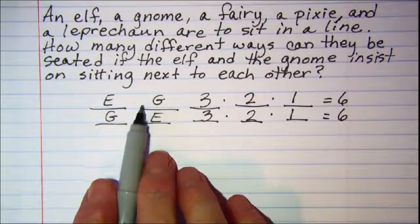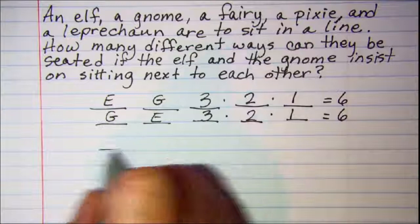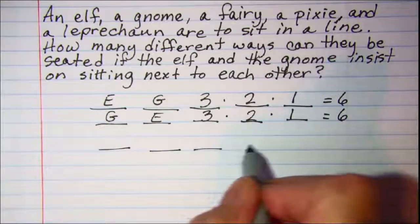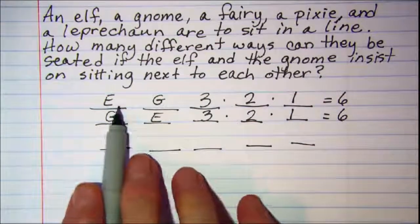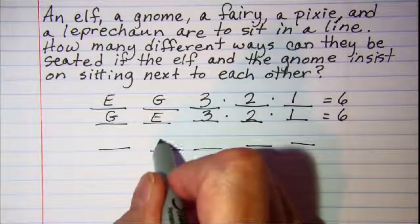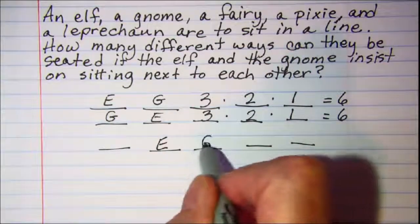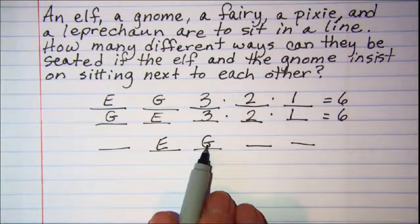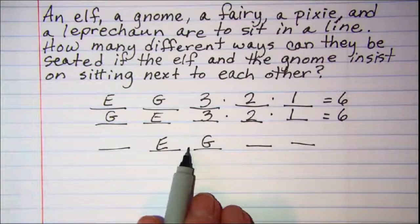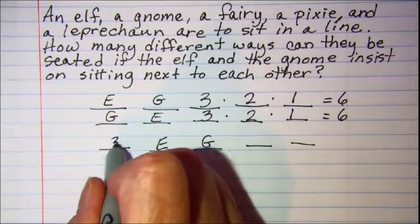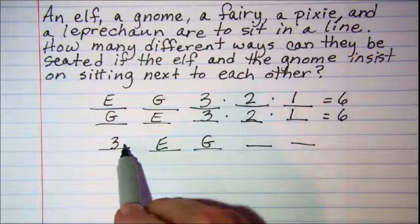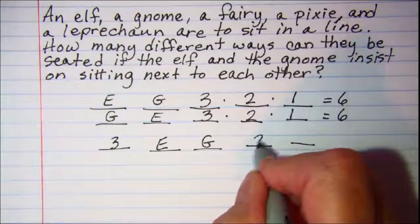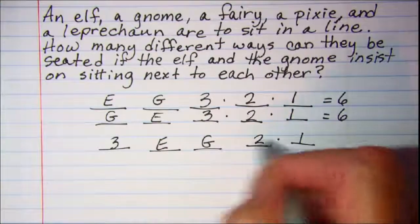So I'm going to go ahead and move the elf and gnome down a seat, so that the elf and the gnome are in these two seats. But again, once I've seated them, then there's three ways to pick someone for this chair, and then two for this chair, and one for this chair. So we have six on this one.